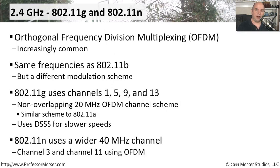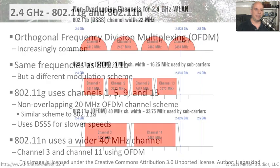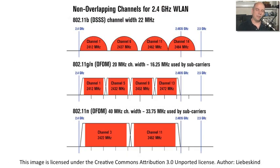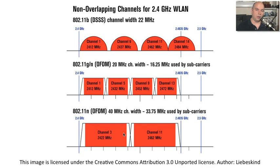802.11n, however, uses a very wide 40 MHz channel. You'll see channels 3 and 11 being used for an 802.11n network using OFDM. There is a Wikipedia diagram showing the 802.11b channel overlap with 22 MHz channels at channels 1, 6, 11, and up to channel 14. For 802.11g and n using OFDM, those are 20 MHz wide channels at channels 1, 5, 9, and 13. For 802.11n only, the 40 MHz wide channels 3 and 11 allow a lot of traffic to move very quickly. It depends on the type of wireless network and whether you're using 2.4 GHz or 5 GHz.